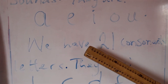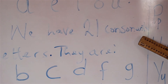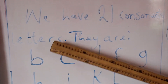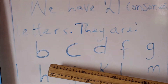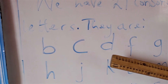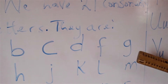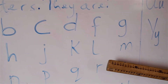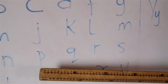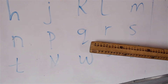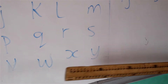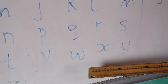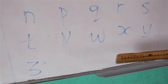There also we have 21 consonant letters. We have 21 consonants. They are B, C, D, F, G, H, J, K, L, M, N, P, Q, R, S, T, V, W, X, Y, Z.